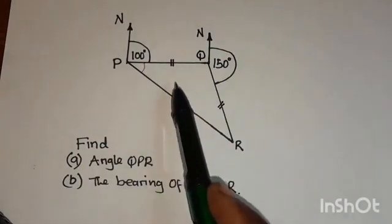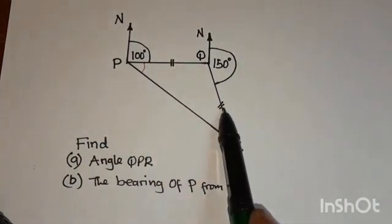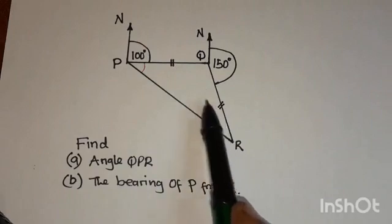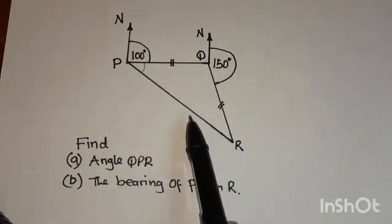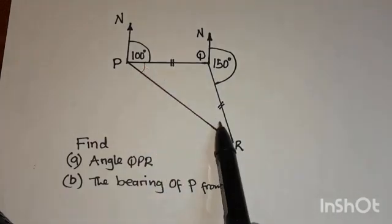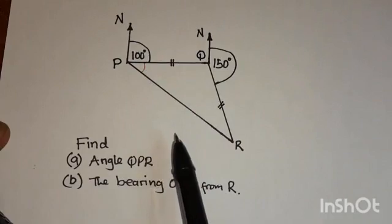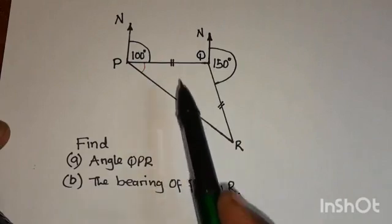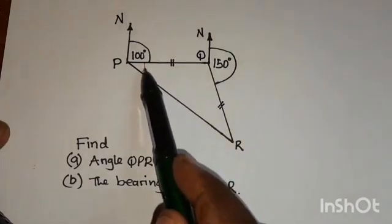The information given is that this side is equal to this side, which means this triangle is an isosceles triangle. In an isosceles triangle, the two base angles — this angle and this angle — are equal. So now, how are we going to find this angle?